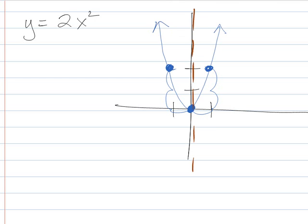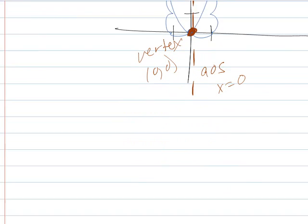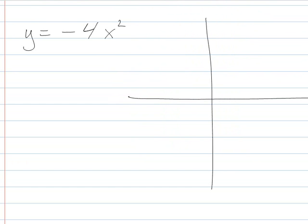My axis of symmetry is still the same at x equals 0, and my vertex is still the same at 0,0. So this really isn't so bad. If I have, say, negative 4 x squared, this one is going to be stretched and shifted.